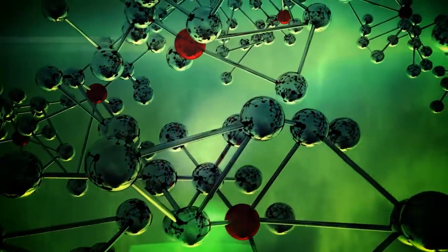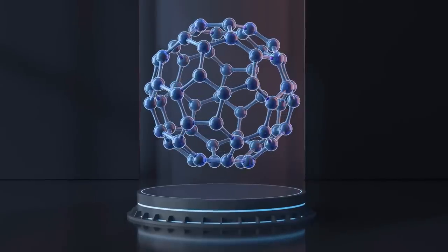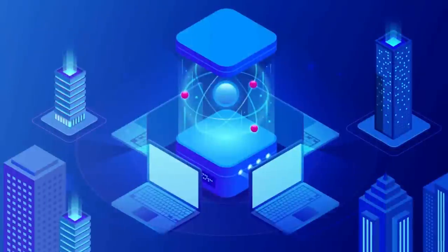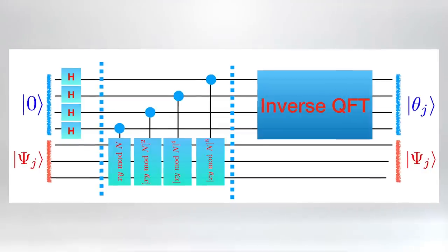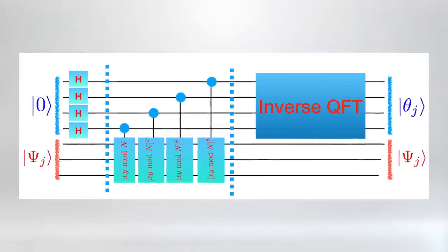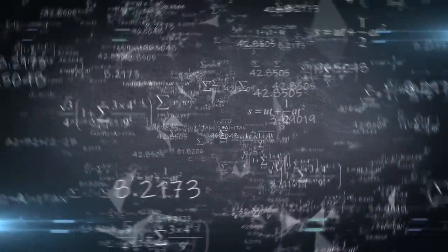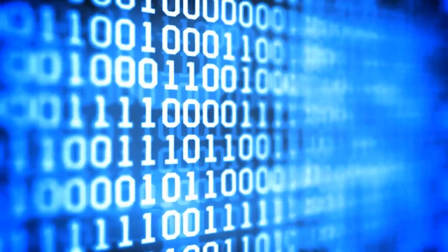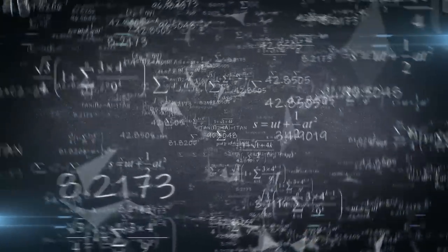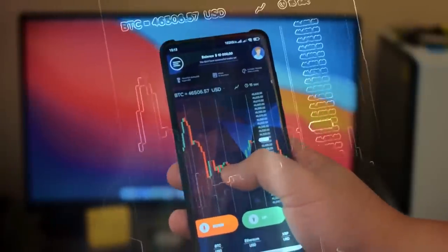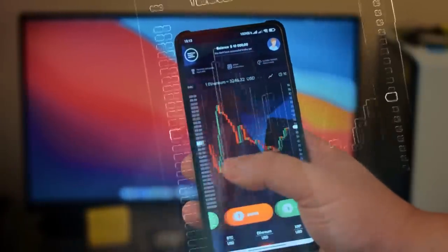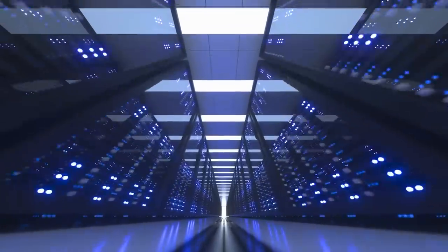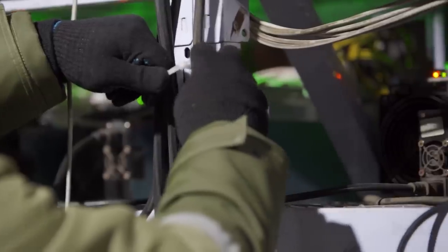Quantum algorithms, when leveraged in these fields, can perform at levels far beyond what is achievable using classical computing. An excellent example of this would be Shor's algorithm. Shor's algorithm, a quantum algorithm formulated by mathematician Peter Shor, can factor large numbers exponentially faster than the best-known algorithm running on a classical computer. This has massive implications for fields like cryptography, which often relies on the difficulty of factoring large numbers as a security measure.